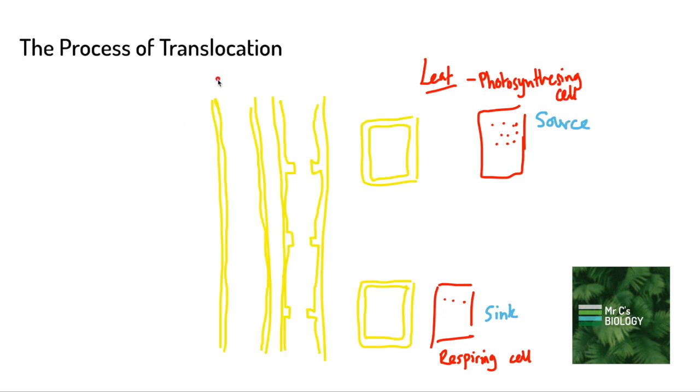I've drawn here the xylem and the phloem. We can tell the difference because the xylem is this continuous column of water. The phloem is made up of cells that have sieve plates in between them, and we have some companion cells here as well.